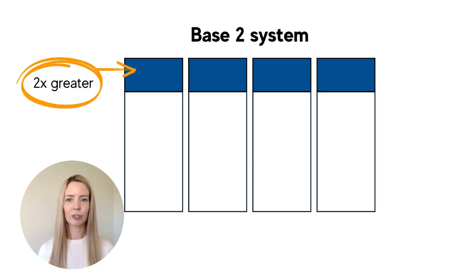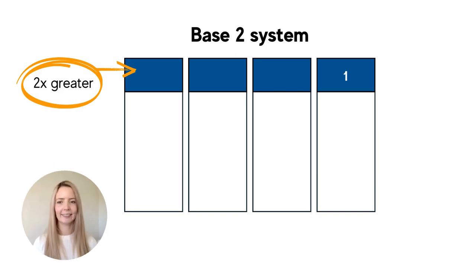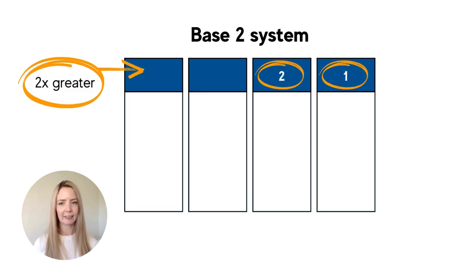Each column is two times greater than the previous. So we're going to start with one. Now in the next column, it needs to be two times greater. So we're going to put two in the next column. Two times greater than two is four. So we put that in our next column. And two times greater than four is eight. So we put that in the next column. We could keep going, but today we will just work with four columns.